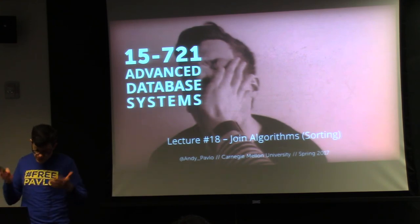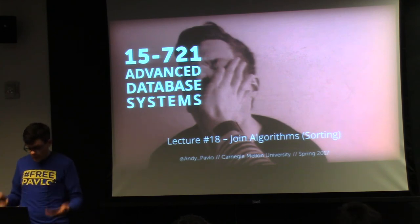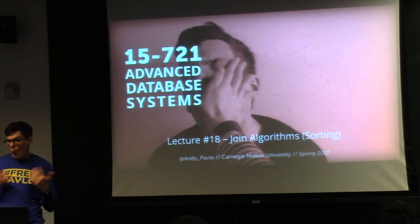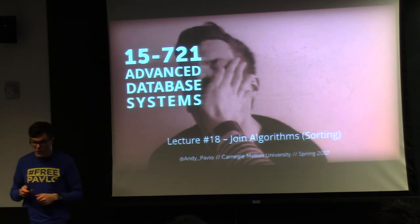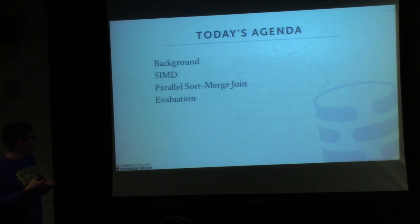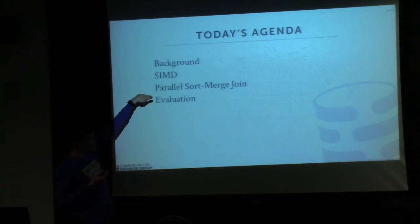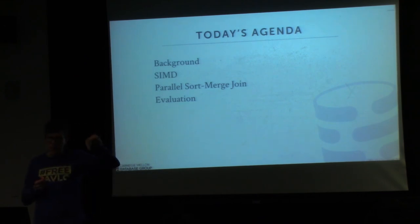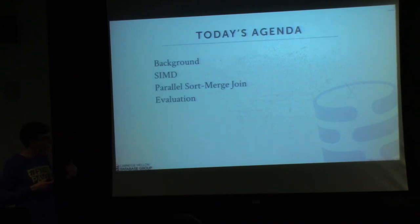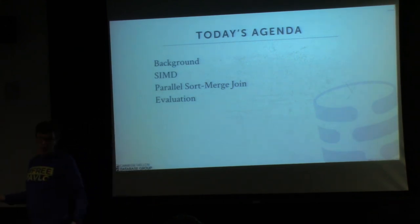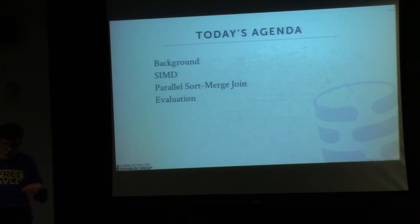Sort-merge join is the second major join algorithm you can have. But as we saw last class and will see today, hash join is pretty much what you're always going to want to use. Today we'll start off talking about the background on SIMD and sort-merge, then focus on how to do the parallel sort-merge algorithms — one from the paper you read, and one developed by the hyper guys. Then we'll have an evaluation comparing these different algorithms plus hash joins, and you'll see why hash joins will be better.